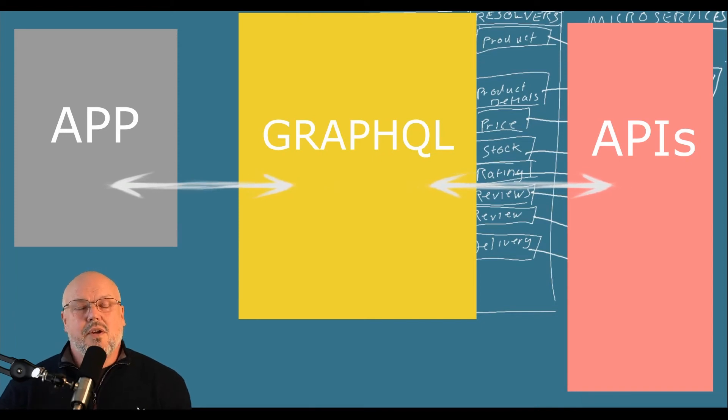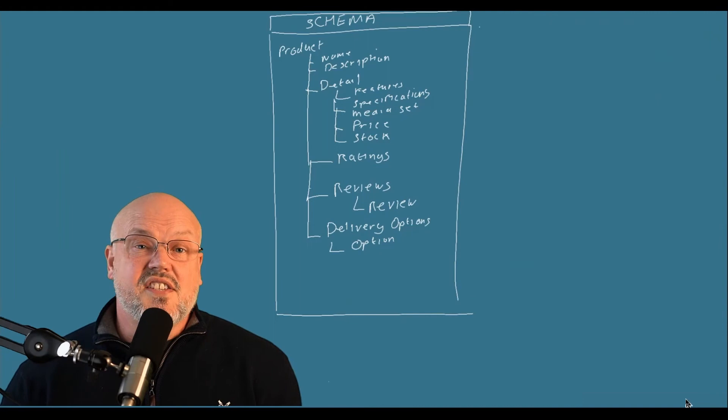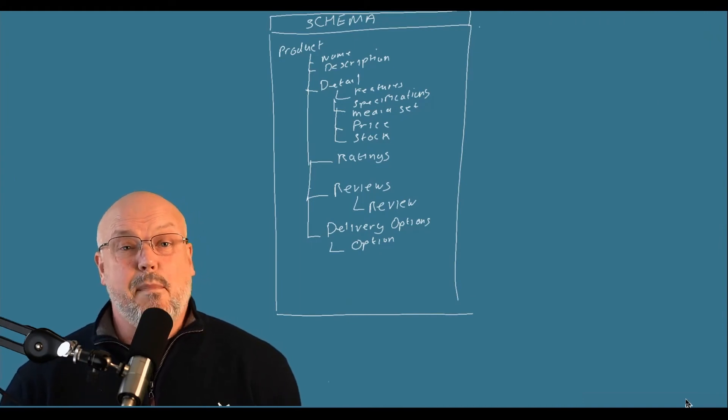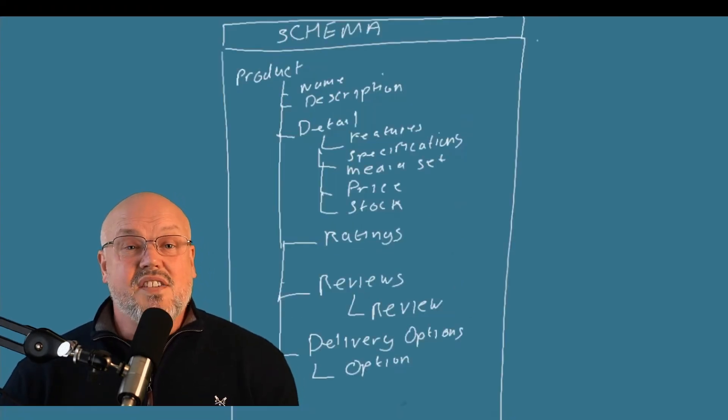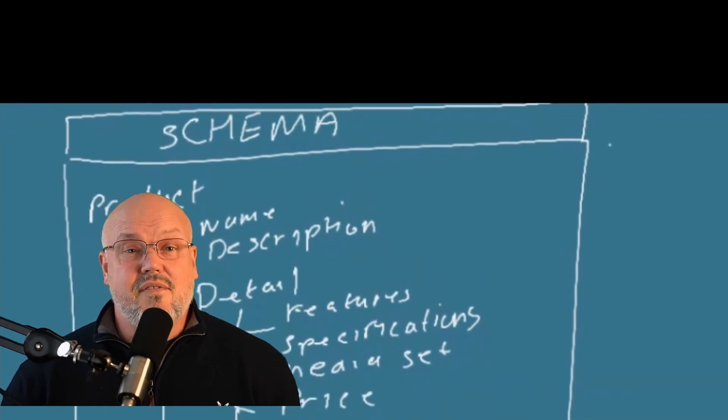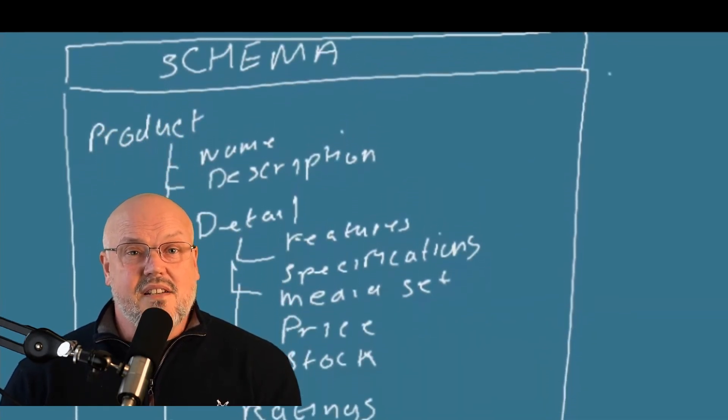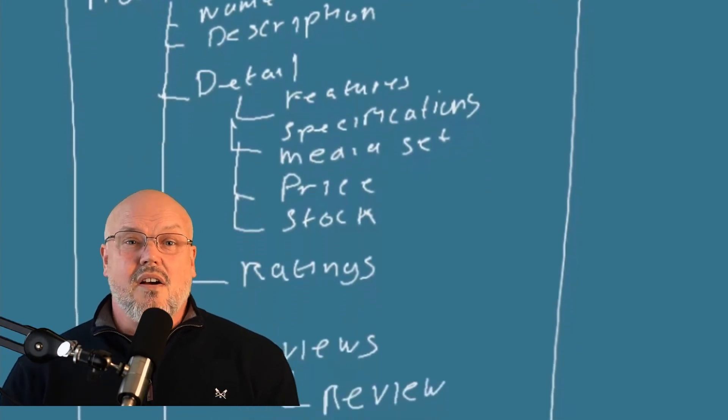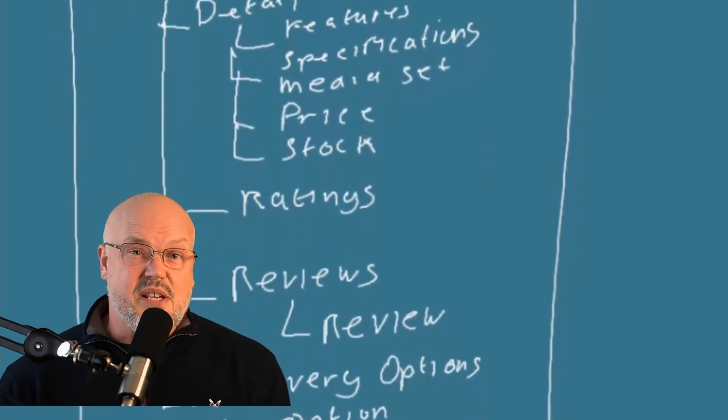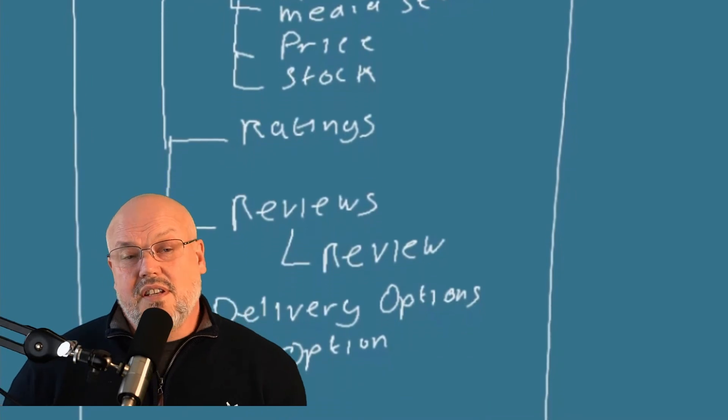To understand GraphQL, you need to understand two key concepts. The first is to create a schema in GraphQL to define the data that you need. This is the answer to the big question. The schema defines the data model for all the concepts in your system. For example, a schema for a product will contain everything: the basic product details, name, description, the ratings, the reviews, all of the variant details and specifications, everything that you need to know about a product will be in that schema.